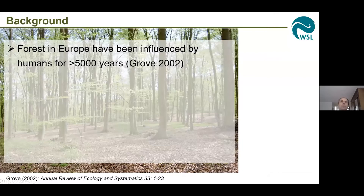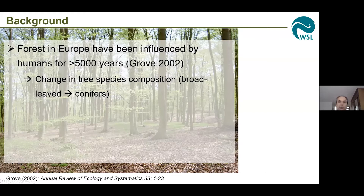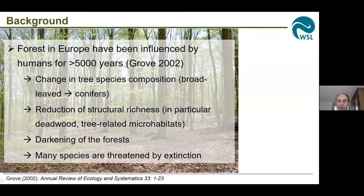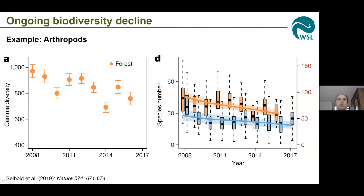You all know that forests in Europe have been heavily influenced by humans for more than 5,000 years, and this resulted in a change in tree species compositions, mainly shifted towards fast-growing conifer species, a reduction of structural richness in our forests — in particular deadwood, tree-related microhabitats, and others — and it also resulted in a darkening of the forests, mainly because of the transition to high forest management and the increasingly use of single tree selection forestry. And what we also observe, of course, is that many species are threatened by extinction nowadays, and this loss of biodiversity seems to be ongoing.